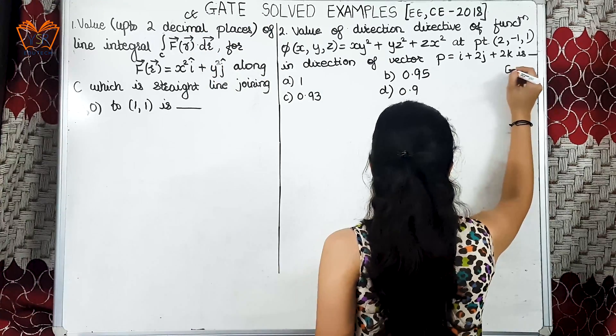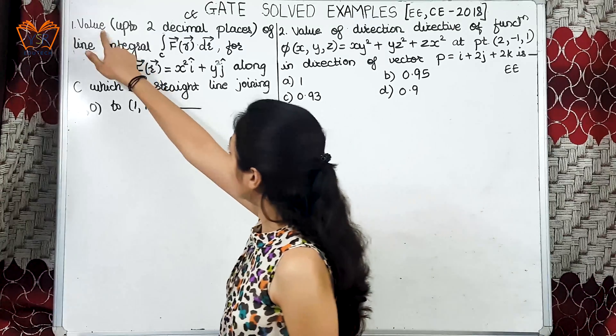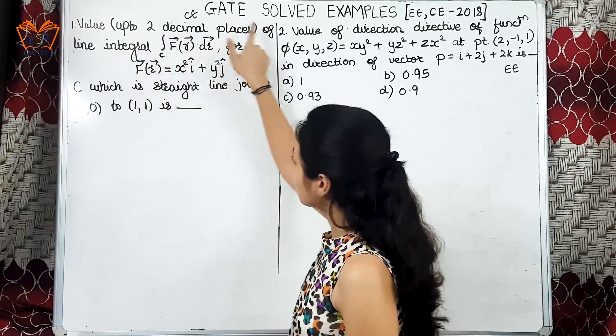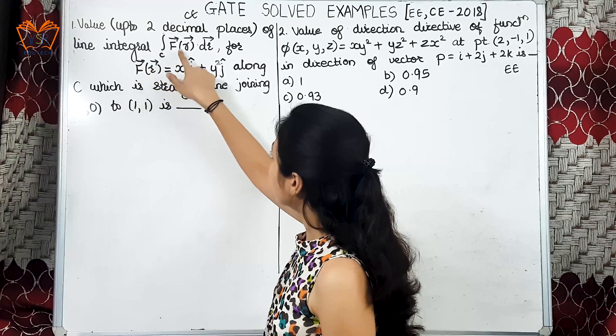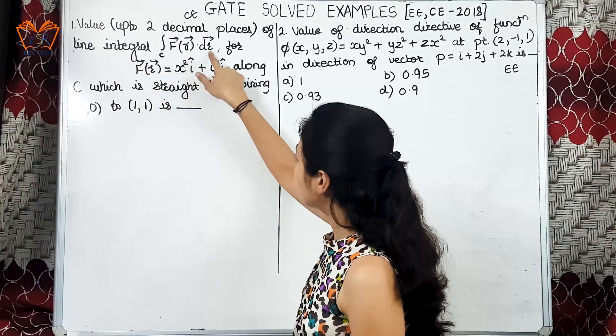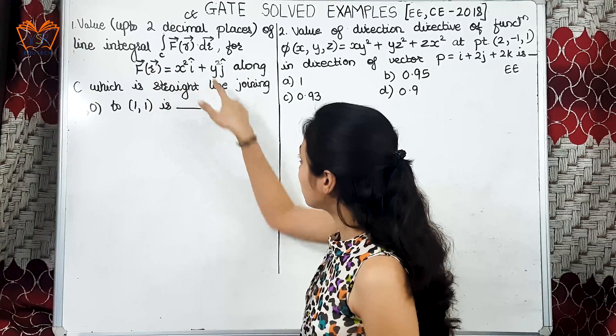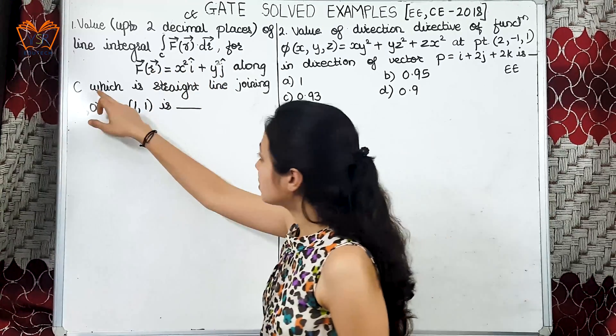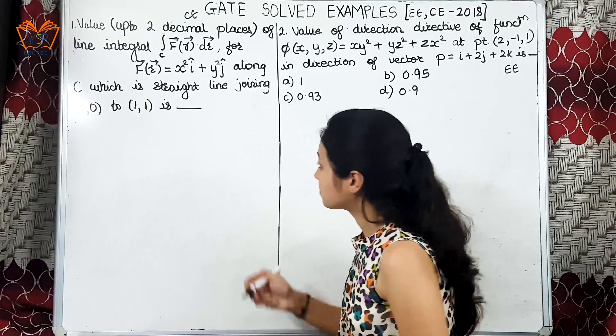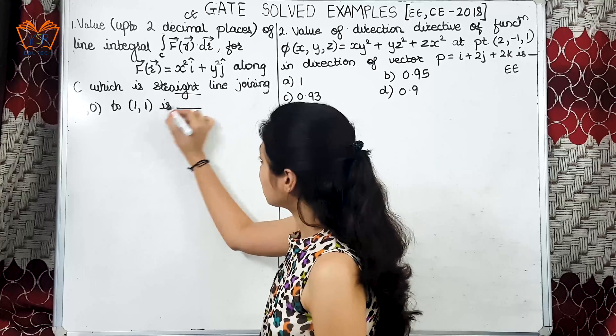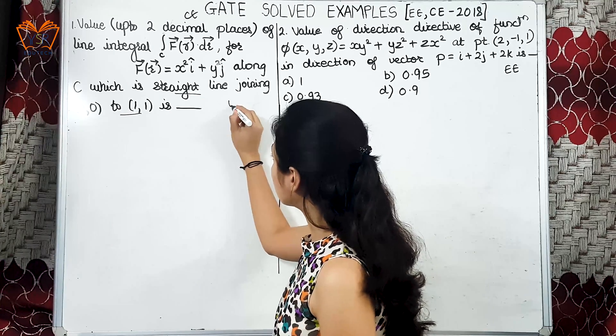Let us start with the first example. Value up to two decimal places of line integral, integration over curve C, f of r vector dot dr, for the given line integral x square i cap plus y square j cap along C, which is a straight line joining points (0,0) to (1,1). If you see the last line, we are saying it is a straight line joining these two points, so we can conclude that y is equal to x.